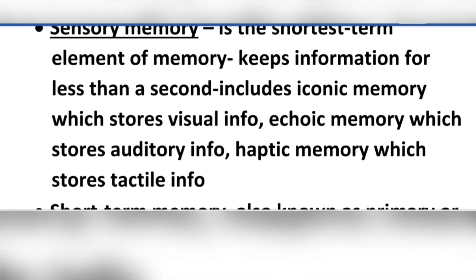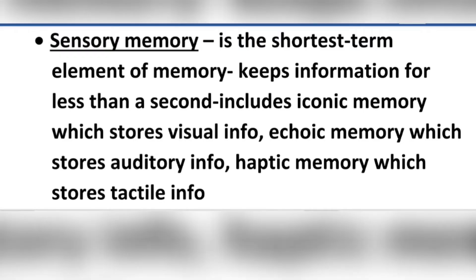Sensory memory includes iconic memory, which stores visual information. Echoic memory stores auditory information — what we hear. Haptic memory stores tactile information — things related to touching and feeling. All of these are types of sensory memory, and we can use these as examples.